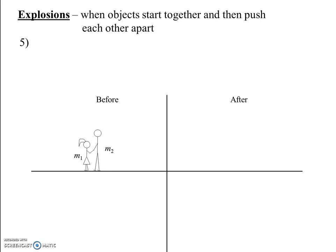In physics, we define an explosion as when objects start together and then push each other apart. Maybe not quite as exciting as fire and dynamite, but that's how we define it in physics: objects starting together and pushing each other apart. Go ahead and read problem 5 to yourself, but don't solve it yet — we'll do it together.